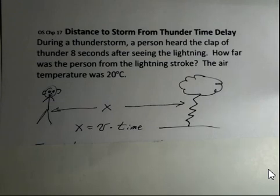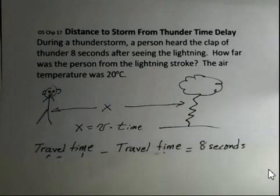But we have to investigate this just a little deeper because we have light traveling and we have sound traveling. Those travel at very different speeds, about a factor of a million different. So the travel time of the sound is the longer number. If we subtract off the travel time of light, then we get the eight second delay.